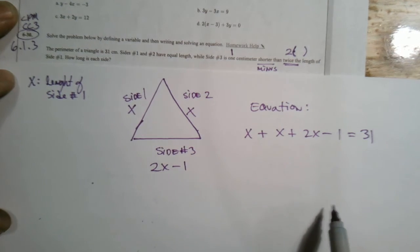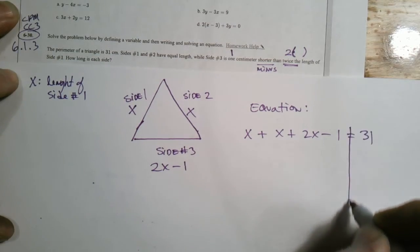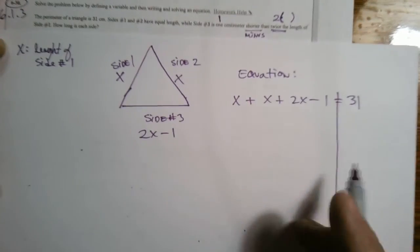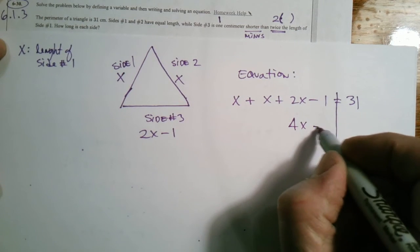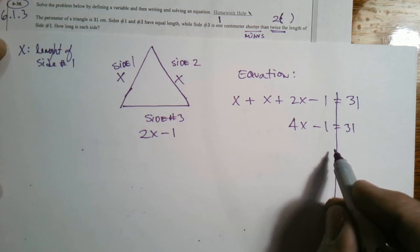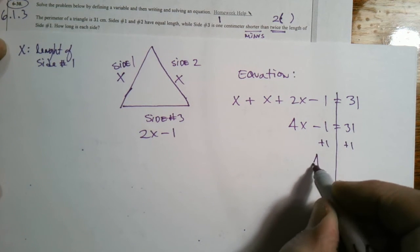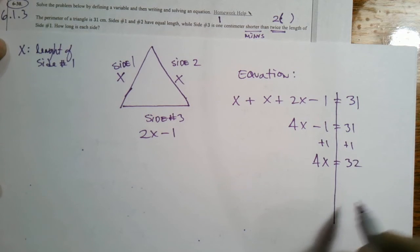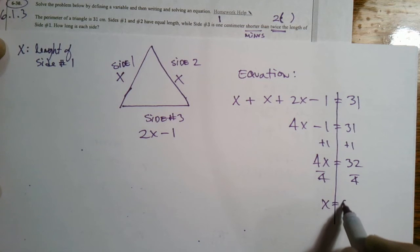So now I have an equation and now I solve the equation for x. I need to combine my like terms. All of that adds up to be 4x minus 1 is equal to 31. Then I start eliminating. Do your inverse operations to get x alone. Add 1 to both sides. You get 4x is equal to 32 and then divide both sides by 4. x is equal to 8.